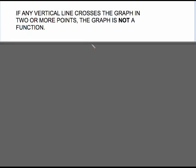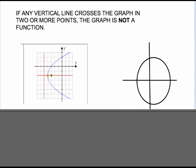So what the vertical line test says, if any vertical line crosses the graph in two or more points, the graph is not a function. How about we draw, how about we draw this vertical line? It crossed my graph twice. It crossed there and there. That means this is not a function. Same idea here. Draw a vertical line here. It crosses once, twice. It is not a function.